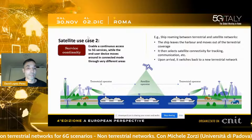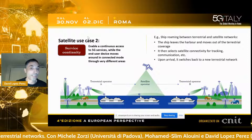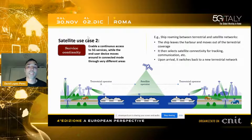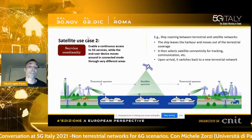Service continuity attempts to enable continuous access to 5G services when the user device moves around in connected mode through very different areas. In this case, you can think of a ship roaming between terrestrial and satellite networks. The ship leaves the harbor, moves out of the coverage area of the terrestrial network, selects satellite connectivity for tracking and communication purposes, and then switches back to the terrestrial network upon arrival at a new harbor.